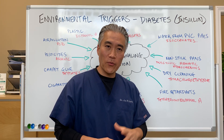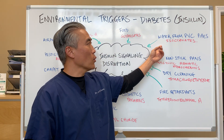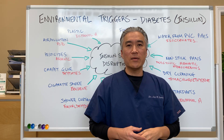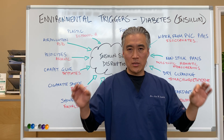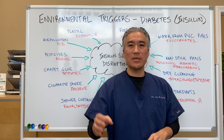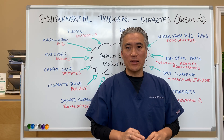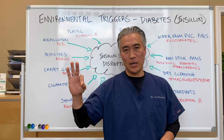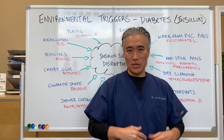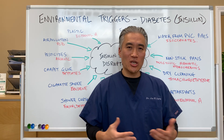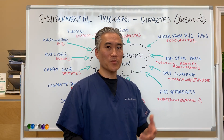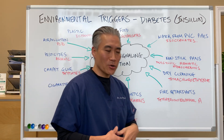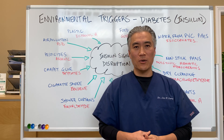Water from PVC pipes is another concern. Rather than copper or metal pipes, plumbing is increasingly using plastics for both hot and cold water. Imagine hot water running through plastic rubber tubing to deliver water in your house — you're leaching chemicals into the water. It already has things in it like chlorine, glyphosates, herbicides, and pesticides. Glyphosate, found in products like Roundup, is an endocrine disruptor.